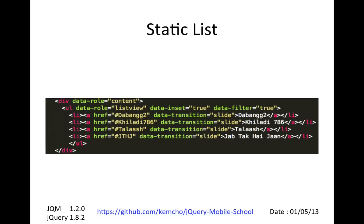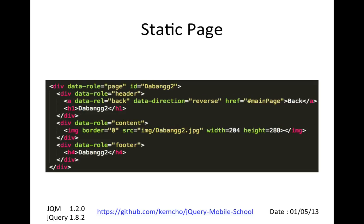Up until now we've created all of our jQuery Mobile pages hand-coded — we know how to create list views, we created a UI with a list view and then we created pages. All of that in the first three videos was done by manually writing the HTML, so anytime you want to change your UI you'd have to change your HTML. We had a static list and a static page, and we manually understood how to write this page and what all of these data attributes mean.